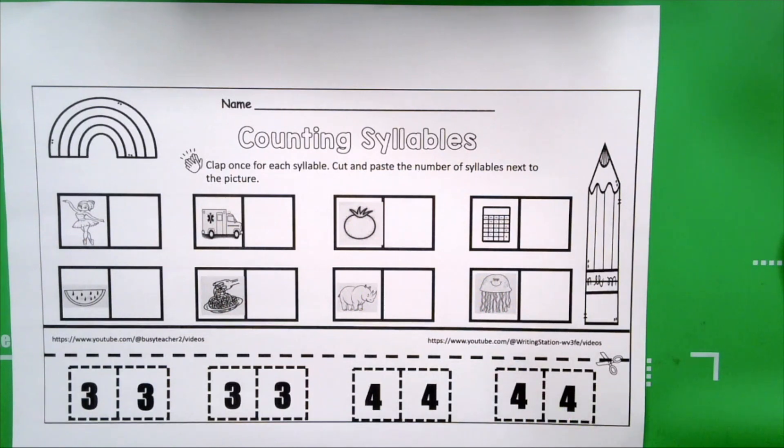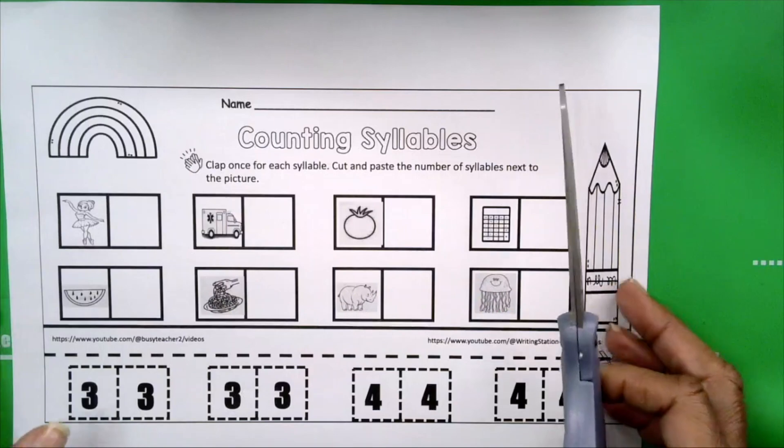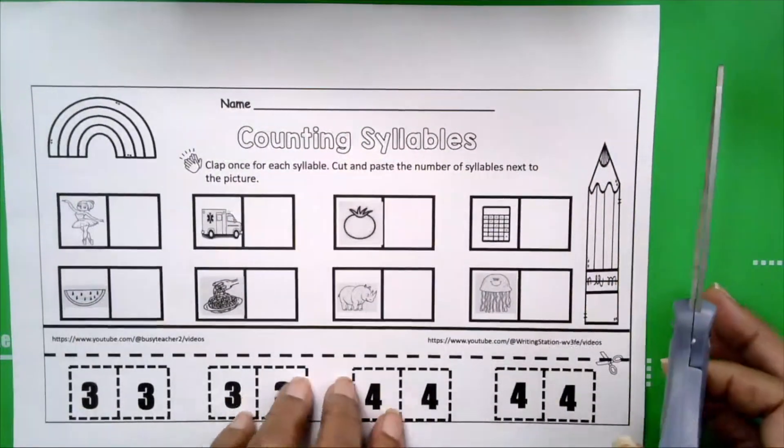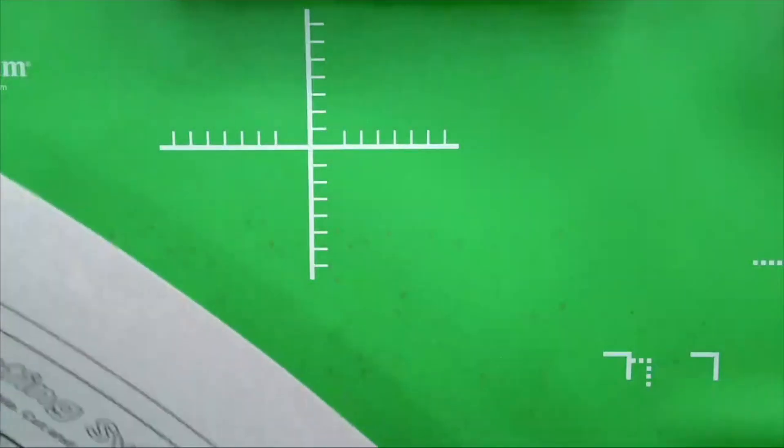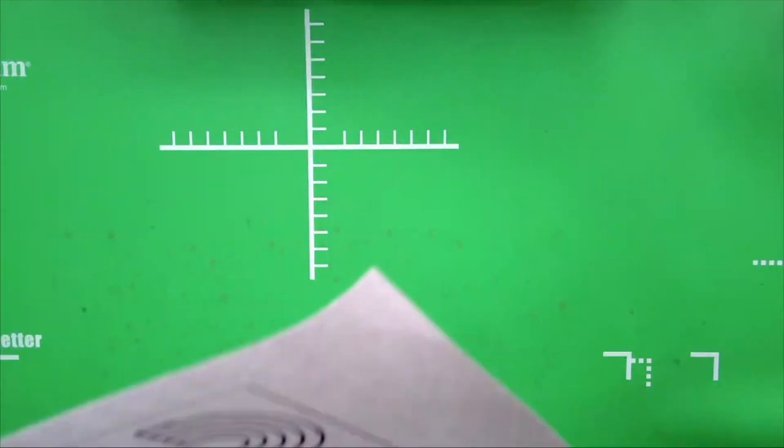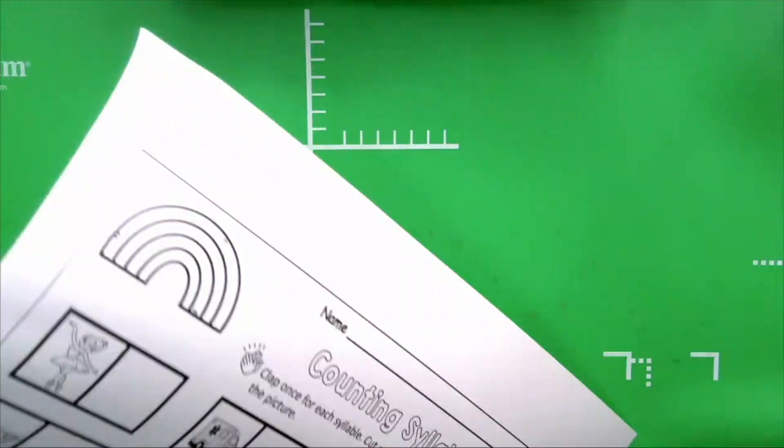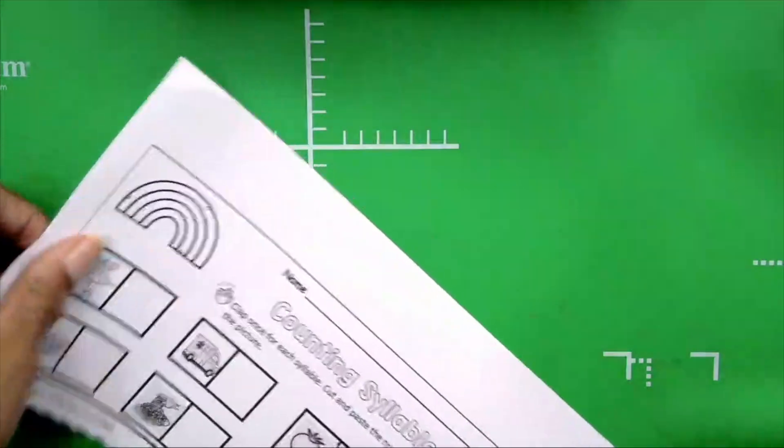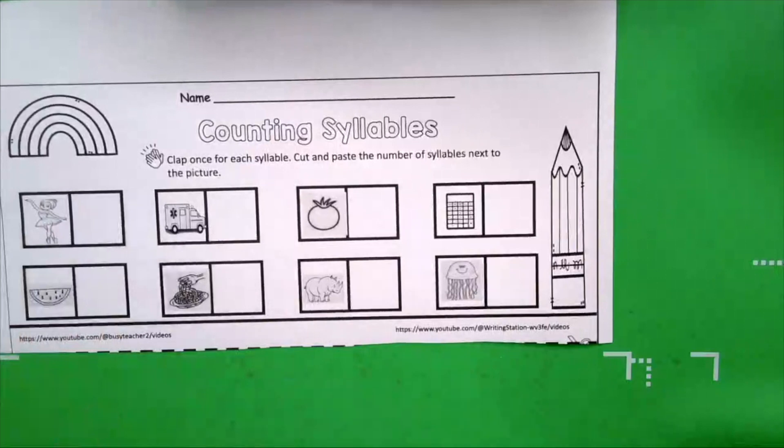First thing we're going to do is we're going to need our scissors. We're going to cut out our numbers at the bottom. We're going to just cut along the dashed line. There are eight pictures and eight numbers that represent the number of syllables. Three or four.